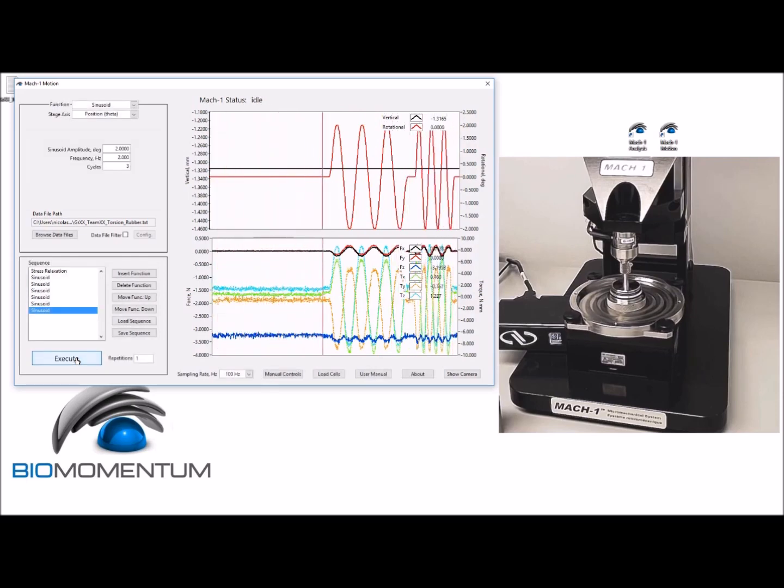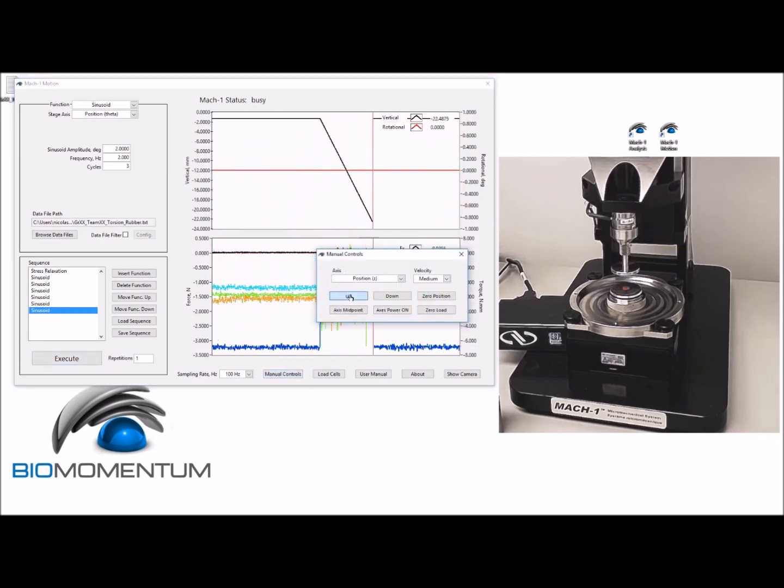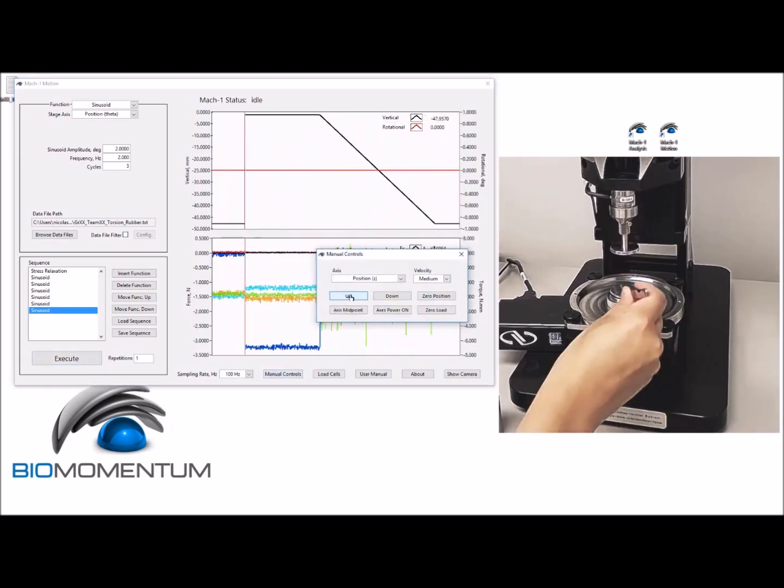Now that the torsional shear test is done, using the manual controls, raise the stage above the sample holder and dispose of the rubber sample.